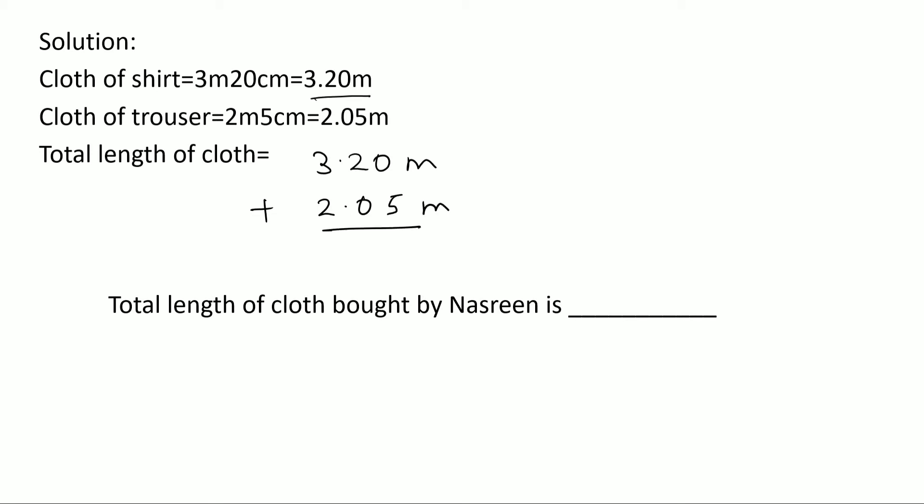Add it up: 5.25 meter. Therefore, the total length of cloth bought by Nasreen is 5.25 meter, which is actually 5 meter 25 centimeter. Okay, moving on to the next question.